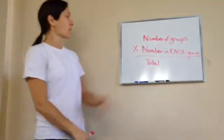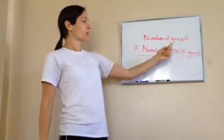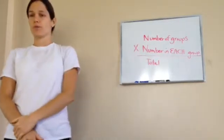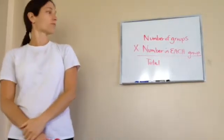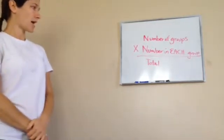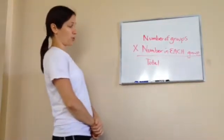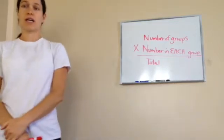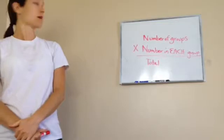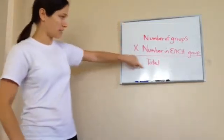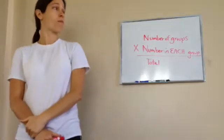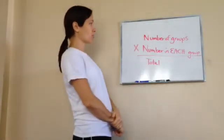Write those things down. You're going to have a number of groups, the number in each group equals the total. Number of groups times the number in each group, and then you'll have a total. I'll explain what I mean by using a story. You'll need to refer back to this equation when you're reading a word story that has to do with multiplication.